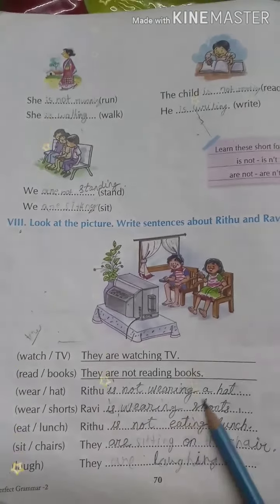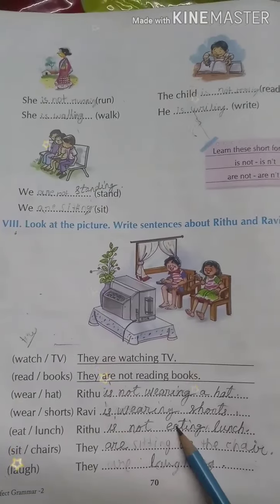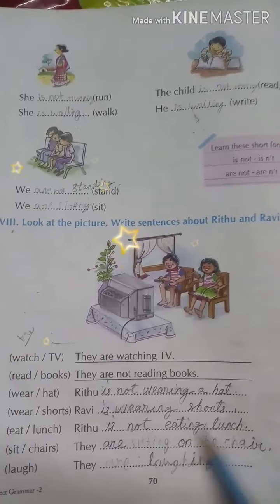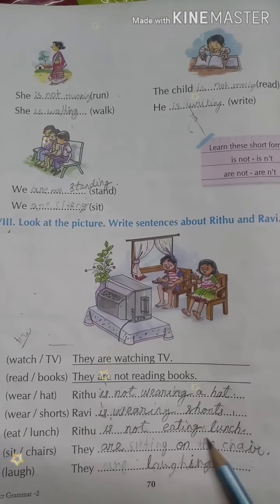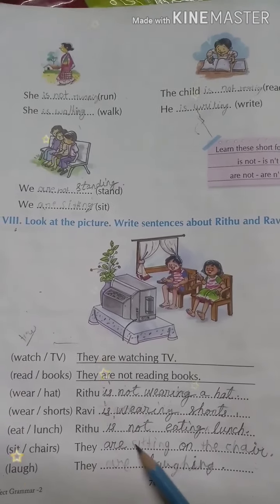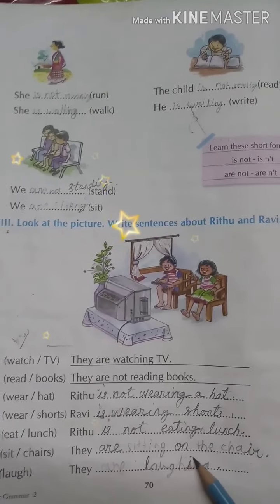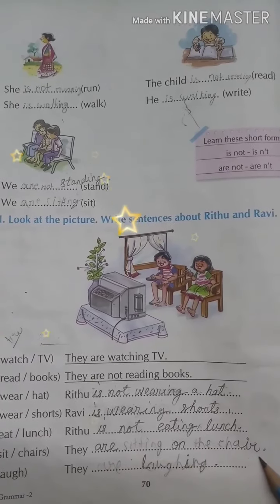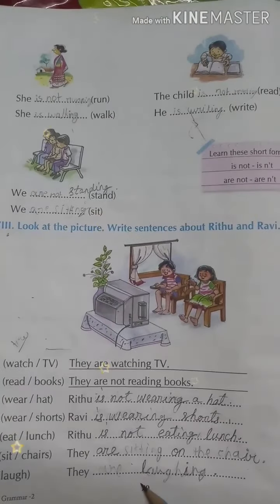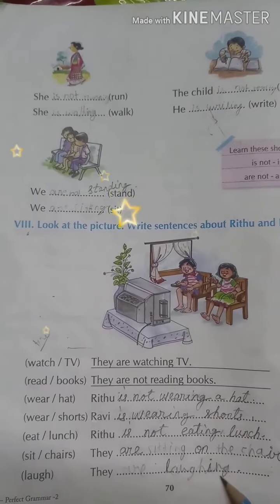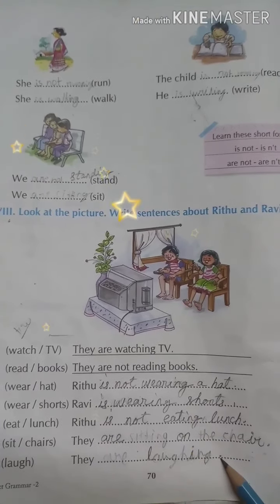Ritu is not wearing a hat. Ritu is wearing shorts. Ritu is not eating lunch. They are sitting — S-I-T-T-I-N-G — sitting on the chair — C-H-A-I-R. They are laughing — L-A-U-G-H-I-N-G.